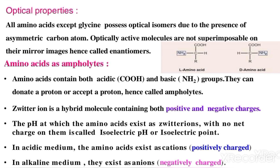All other amino acids possess optical isomers, also known as enantiomers. These are isomers which rotate plane-polarized light to the left or right. Enantiomers are isomers that are mirror images of each other, and these compounds are optically active.